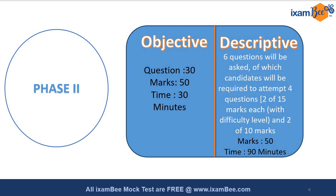Once you are done with the objective you will be redirected to the descriptive paper. In the descriptive paper you will get six questions out of which you are only required to attempt four — two questions for 10 marks and two questions for 15 marks, totaling 50 marks. You will get 90 minutes to write four questions. This is the biggest challenge: the word limit for the 15-marker is 600 words and for the 10-marker is 400 words. Writing four descriptive answers within those word limits in 90 minutes is not an easy task.